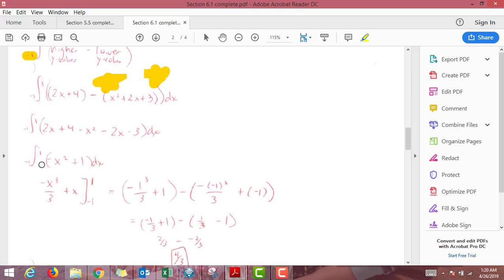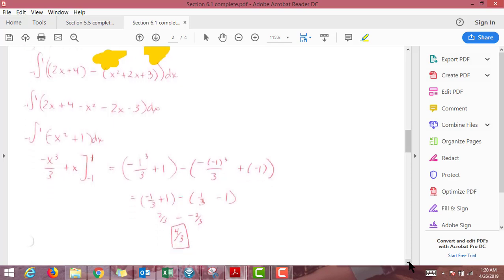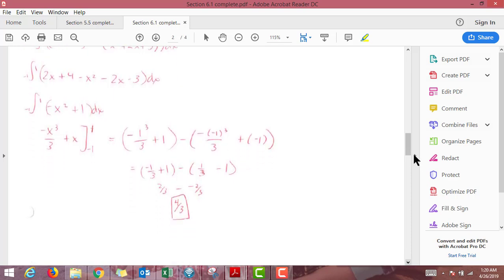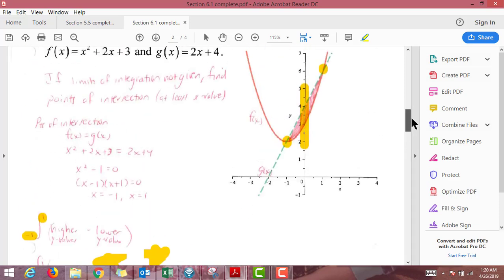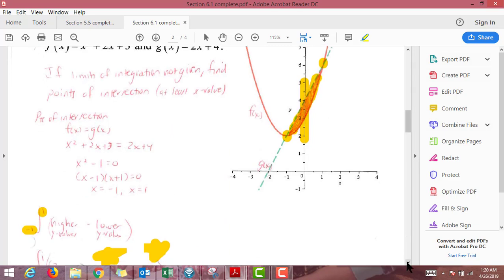And so I need the reverse power rule for both of those. Remember that once I do the anti-derivative, the integral sign is gone, but I'm not done. I still need to plug the 1 and the negative 1 in, so this is my notation for that. Plug 1 into the entire thing, minus parentheses, plug negative 1 into the entire thing. And then work it out. So I get 4 thirds. So if you look at this area that is shaded in red there, the area of that is 4 thirds square units.